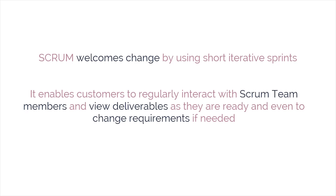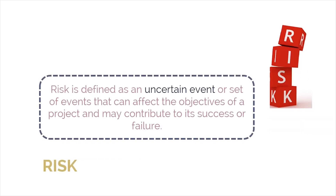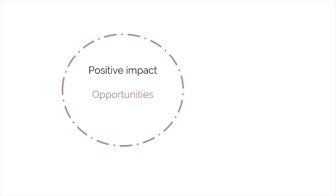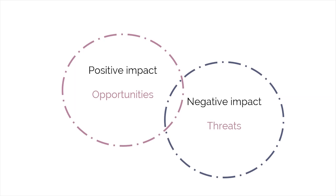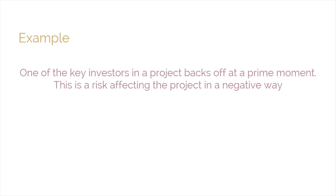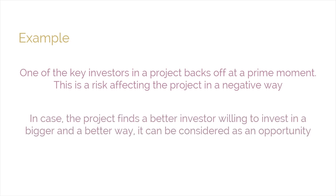Let's now look at the last Scrum aspect: risk. Risk is defined as an uncertain event or set of events that can affect the objectives of a project and may contribute to its success or failure. Risks likely to have a positive impact are referred to as opportunities, whereas threats are risks that could affect the project negatively. For example, if a key investor backs off at a prime moment, that is a negative risk — but if the project finds a better investor willing to invest in a bigger and better way, it can be considered an opportunity.